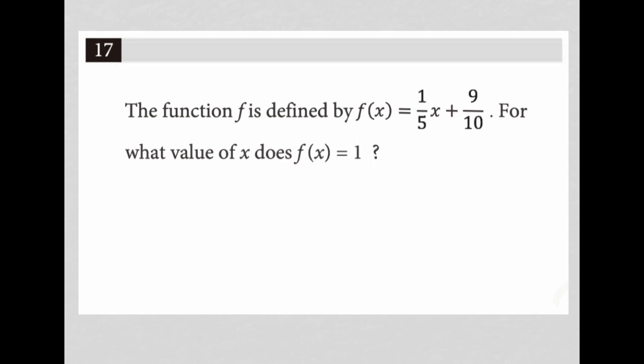All right, so in essence, I'm using a plug-in information from the question technique here. The question tells me that f of x equals one. It's asking me how that happens, like what x value leads to that happening. So I'm going to replace this f of x here with one and then solve for the x. That's my entire process.